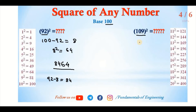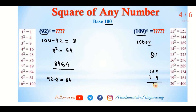Now for 109, which is greater than 100: 109 minus 100 is 9, and 9 squared is 81. Since 109 is above 100, we add: 109 plus 9 is 118. So we write 11881, which is the square of 109. Any number near 100 can be found using this base 100 method.